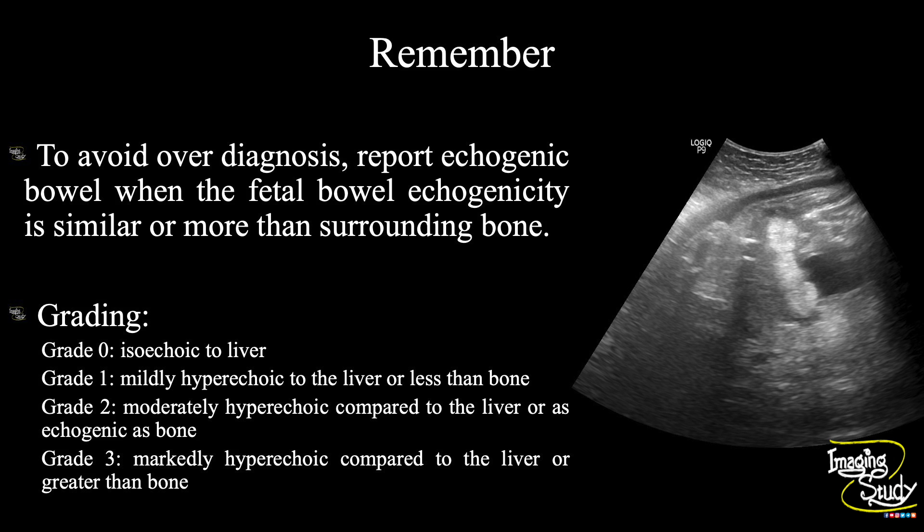If there is difficulty discerning whether the bowel is as echogenic as bone, one can progressively decrease the gain to see which structure disappears first. This is a good way to understand the difference in echogenicities among bone, liver, and bowel.